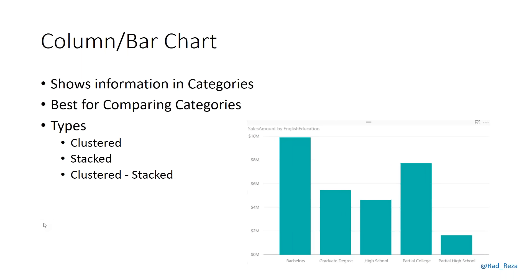Column and bar charts are normally great for visualising categories — a measure across a bunch of categories. If those categories are sequential or ordered over time, line chart or area chart may be better. For categories, column and bar charts work best. There are different types: clustered, stacked, or cluster-stacked. Cluster-stacked is not available in Power BI currently. I'll show the difference between clustered and stacked.